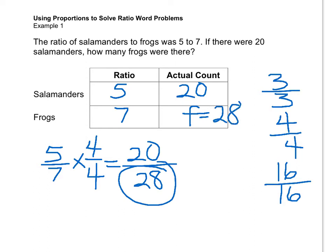The ratio of salamanders to frogs is 5 to 7. How many frogs are there? There are 28 frogs.